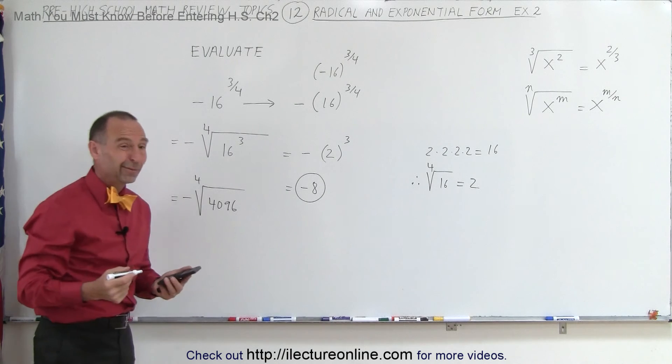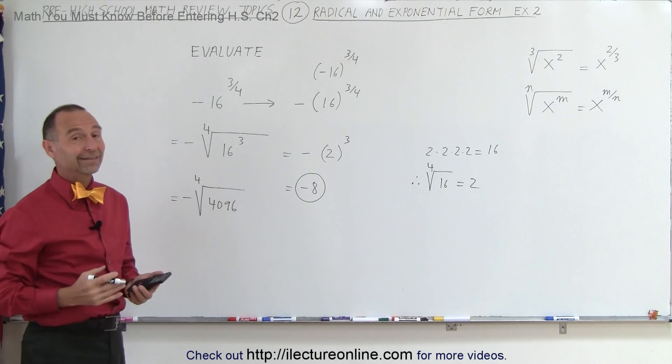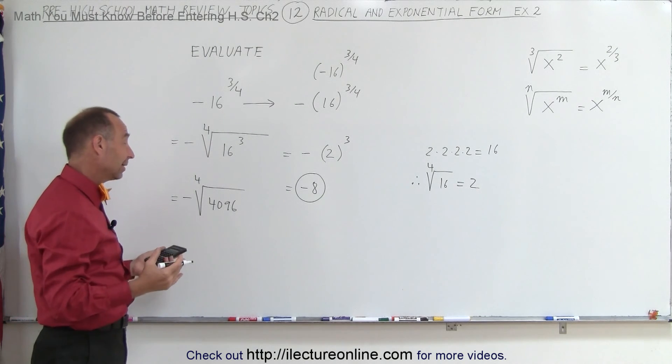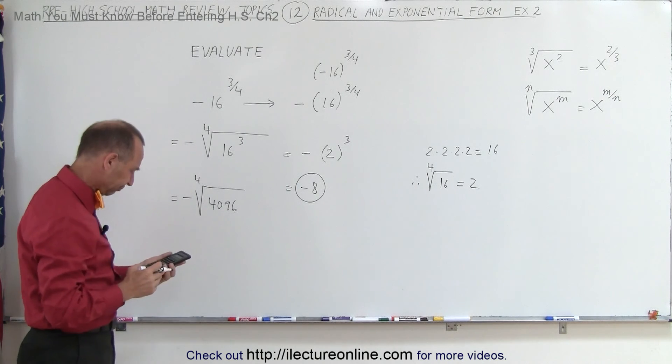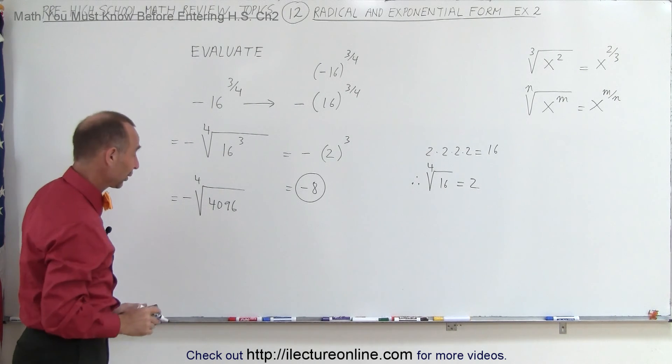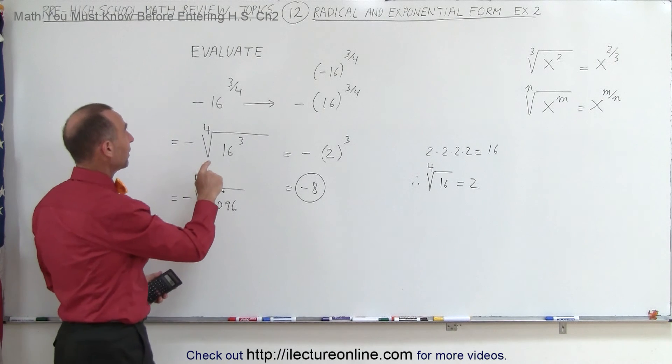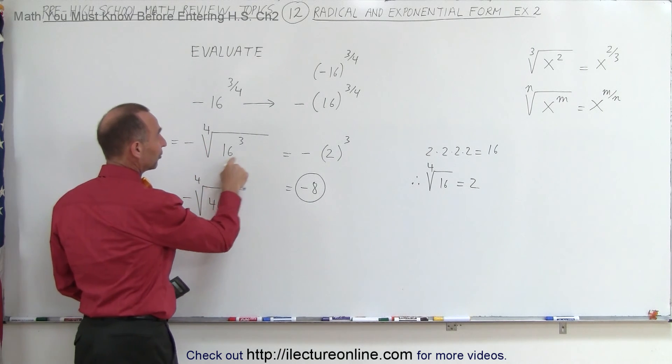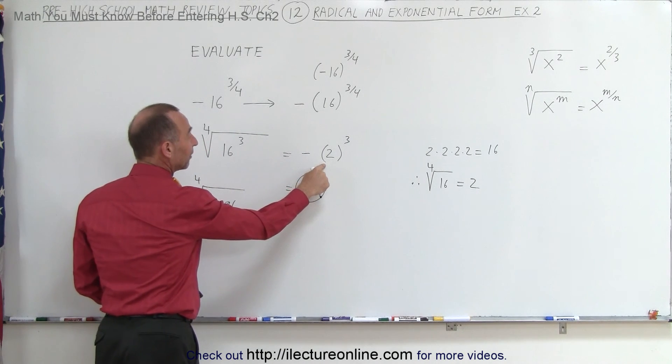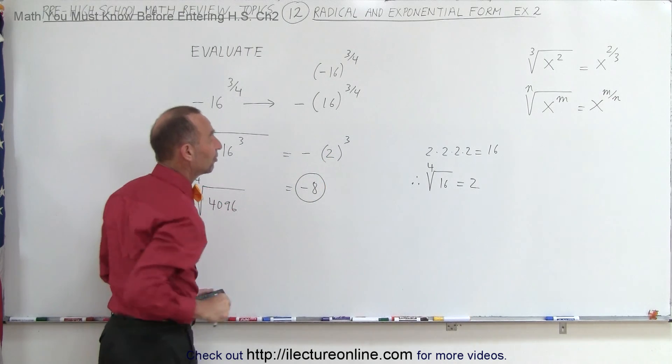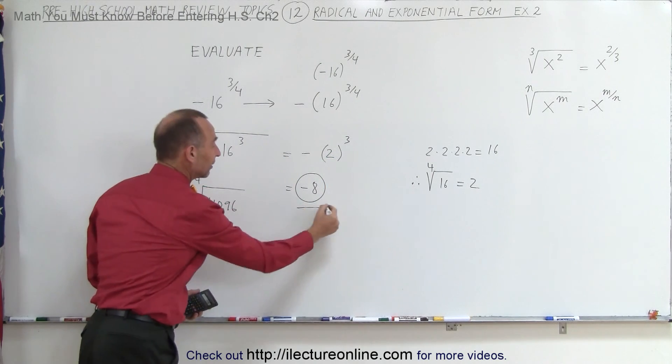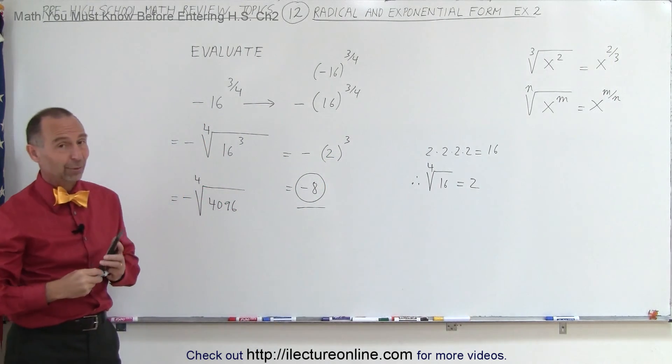Now the question is, what is the fourth root of 4096? Unless you have a calculator, you wouldn't be able to figure that out on your own. Maybe you could, but it would be a lot of work. So I would recommend that we take the fourth root first, go to negative 2 to the 3rd power, and then simply take 2 to the 3rd power to get the final answer. And that's the best way to do it.